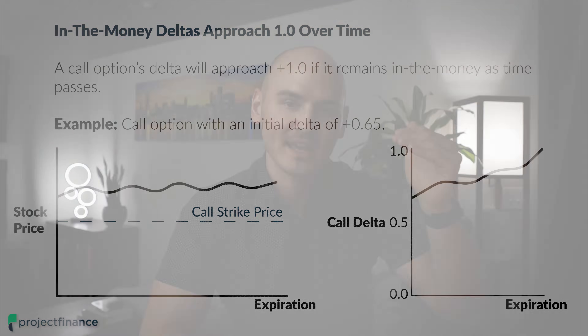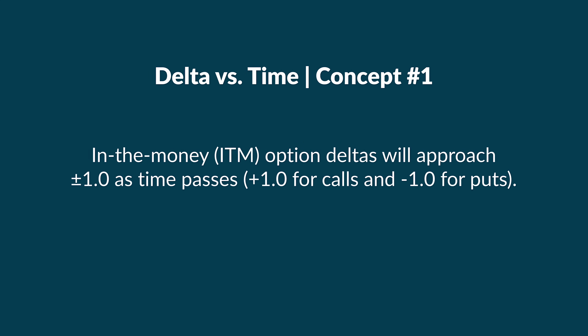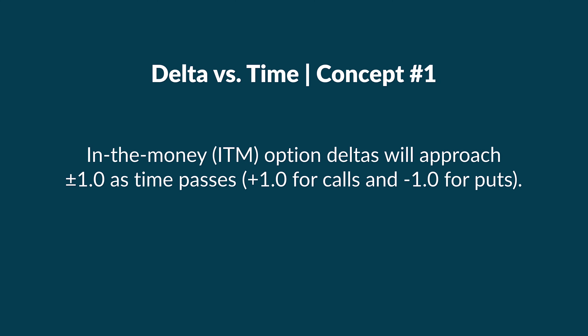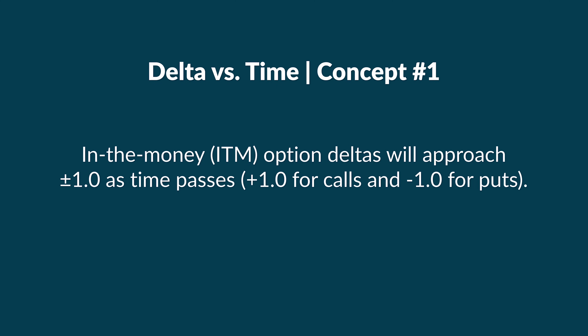If it remains in the money through those 30 days to expiration and at expiration it is still in the money, then the delta of that call option will be a positive 1.0. That means if the stock price goes up by $1, the option will gain $1 in value, and if the stock price falls by $1, the option will lose $1 of value — much more sensitive than the initial delta of 0.65. So concept number one is that in-the-money options will see their deltas approach positive or negative 1.0, depending on whether it's a call or put, as expiration approaches.